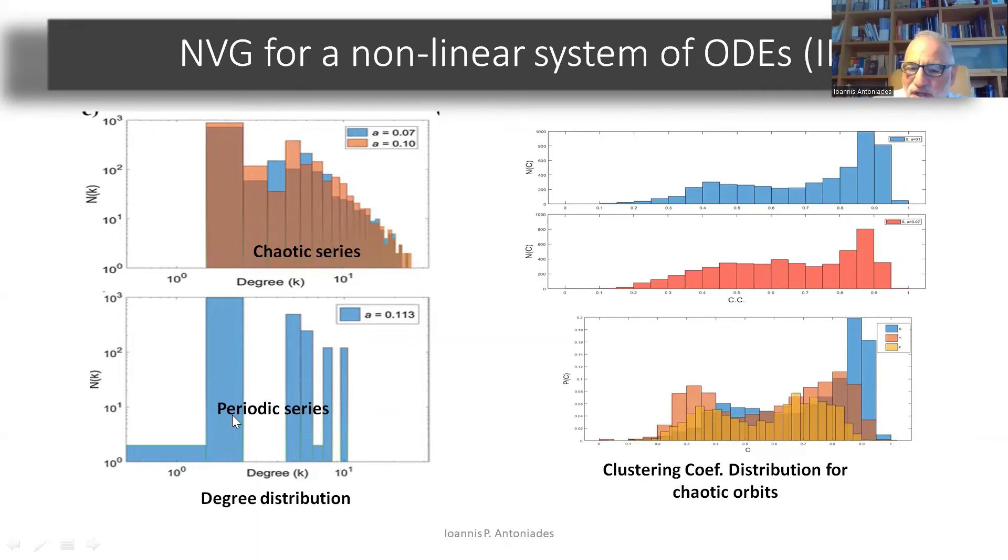And however, for the nearly periodic time series, you can see the degrees are at most 10. And you have a richer structure because you have some intermittency here. You can see a small power law tail. So the chaotic dynamics intermixed gave a fingerprint in the degree distribution.